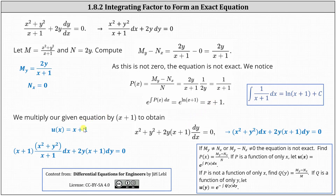The integrating factor is u(x) = x + 1, so we multiply both sides of the differential equation by x + 1. Simplifying, we get the new differential equation: (x² + y²) dx + 2y(x + 1) dy = 0. This differential equation should now be exact.